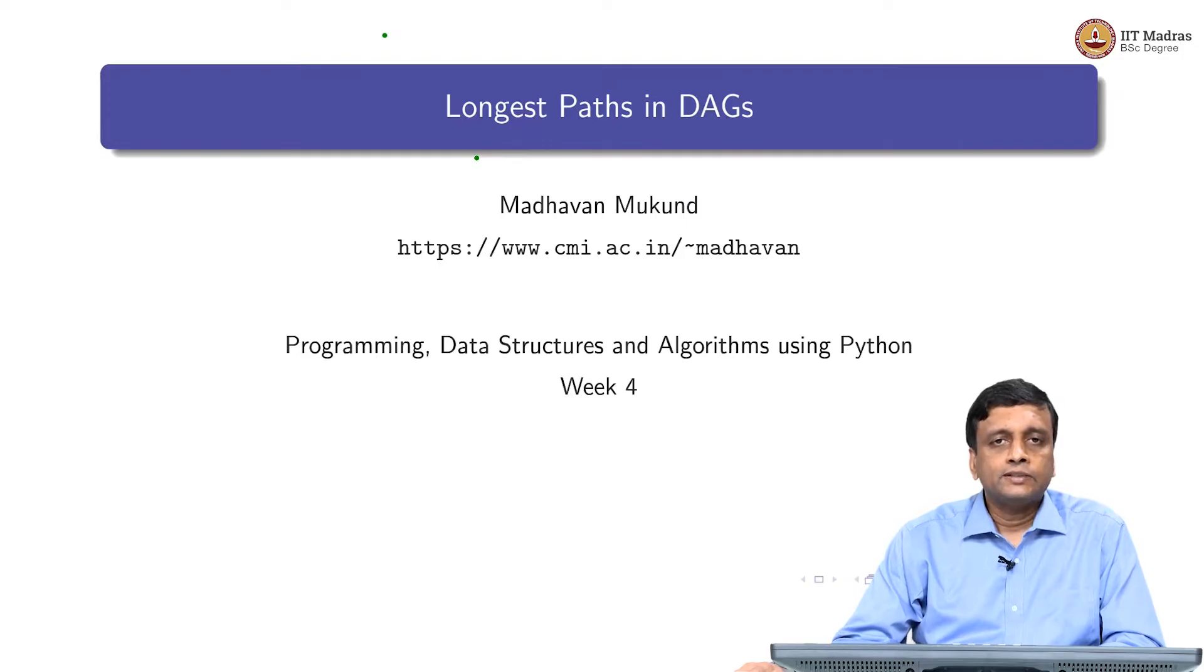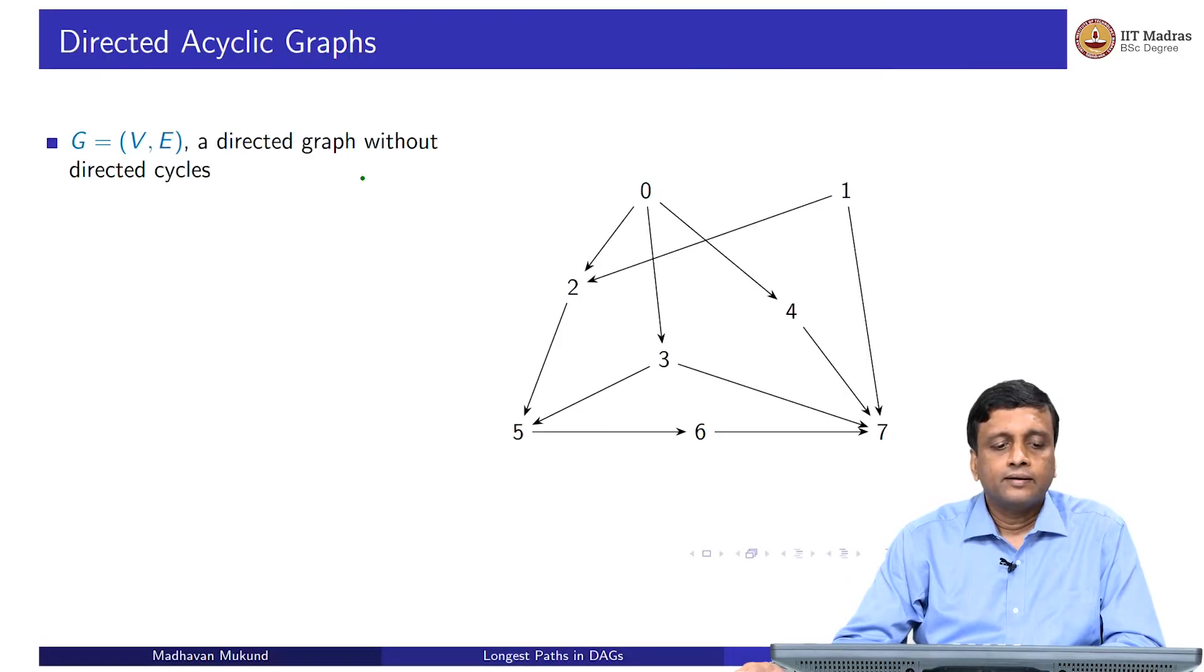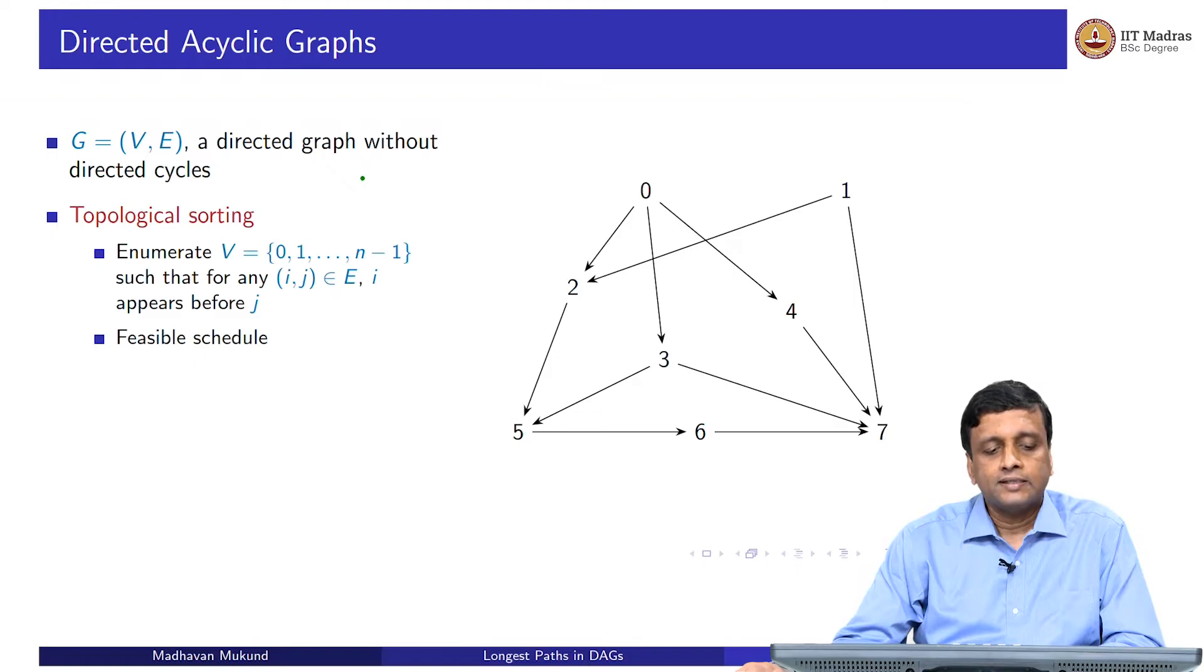The second problem for DAGs is the longest path. We have a DAG without cycles, and we saw that a topological sort will enumerate this in some feasible order such that if j depends on i, if there is an edge from i to j, then i will always be enumerated before j.